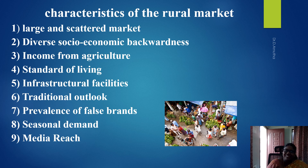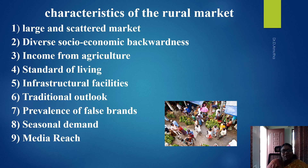Infrastructural facilities: Infrastructure facilities like roads, warehouses, communication systems and financial systems are inadequate in rural areas. Most of the rural markets are not connected by roads, and the same is the problem with transporting goods from urban markets to rural areas. Hence, physical distribution is disadvantaged.